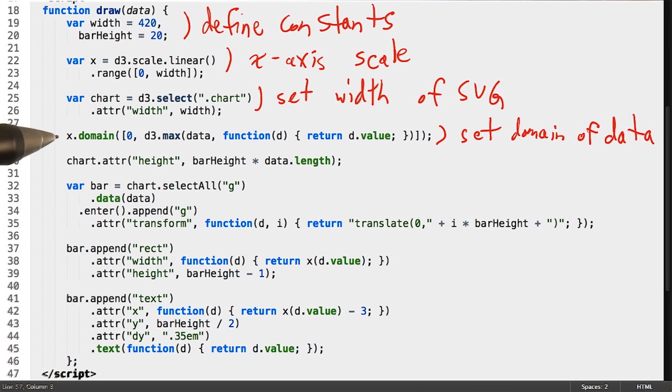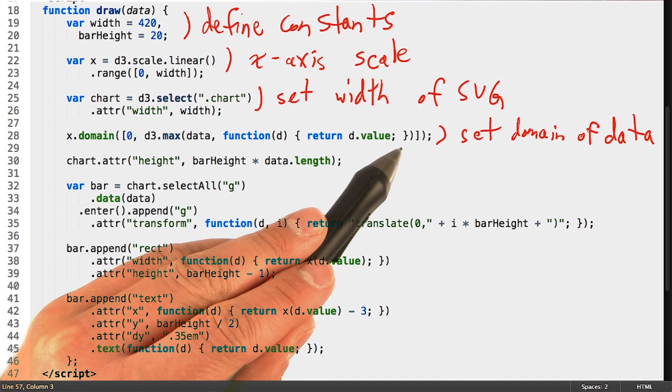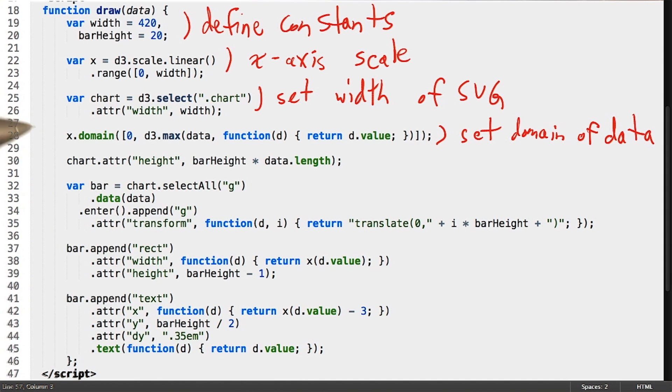On line 28 here, the call to the domain method on x has quite a lot of things going on with it. First off, x was created above here as a linear scale. Remember, however, what I said earlier about d3's chainable syntax.